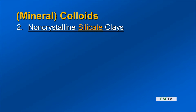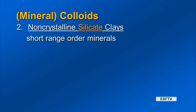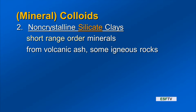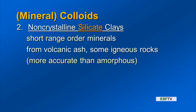For the mineral colloids, we have non-crystalline silicate clays as the second group — so crystalline and non-crystalline. We're still silicate clays; the primary differentiation is crystalline versus non-crystalline. Some of these are referred to as short-range order minerals, which has to do with how the pattern comes back in X-ray diffraction. These types of non-crystalline silicate clays occur in volcanic ash as well as some igneous rocks.